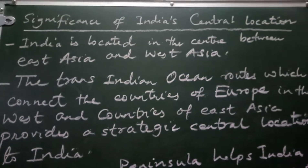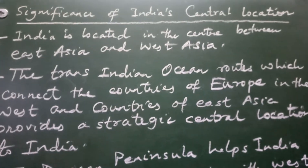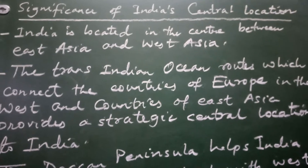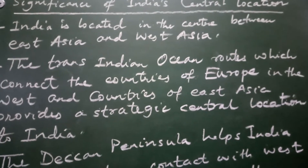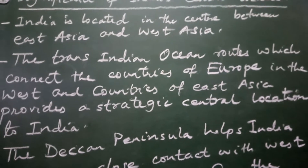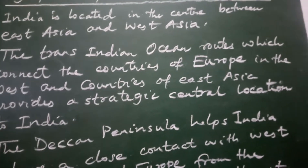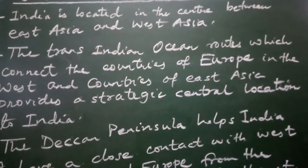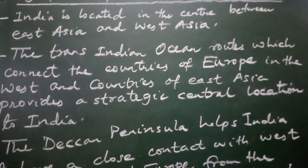In this video, let us discuss the significance of India's central location. India is located in the center between East Asia and West Asia. There is a Trans-Indian Ocean route which connects the countries of Europe in the West and the countries of East Asia, providing a very important central location to India.